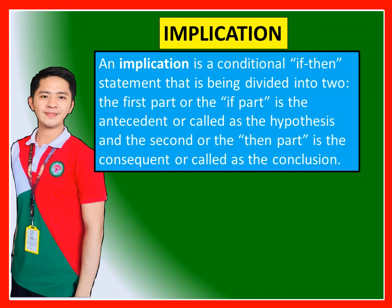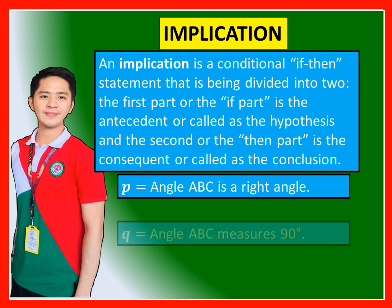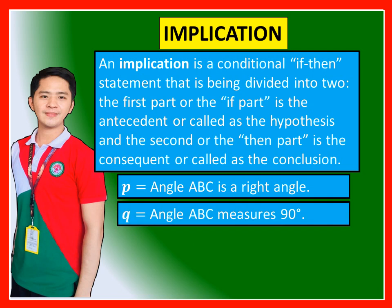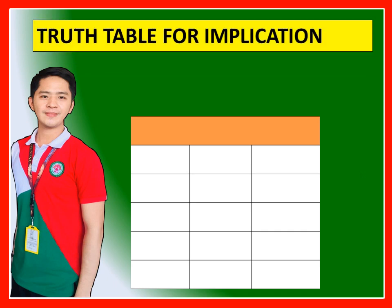Implication: An implication is a conditional 'if-then' statement divided into two parts. The first part, or the 'if' part, is the antecedent or hypothesis. The second part, or the 'then' part, is the consequent or conclusion. Example: P is 'Angle ABC is a right angle' and Q is 'Angle ABC measures 90 degrees.' The implication P then Q is: 'If angle ABC is a right angle, then it measures 90 degrees.'